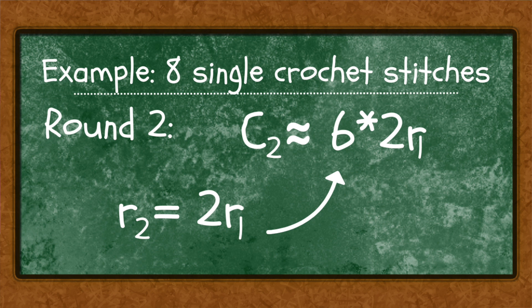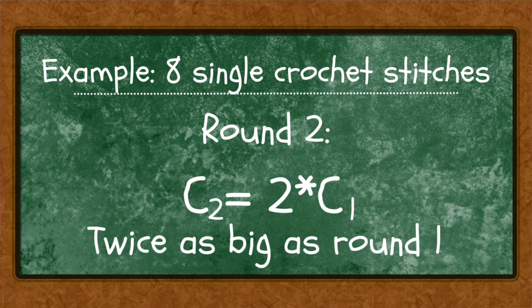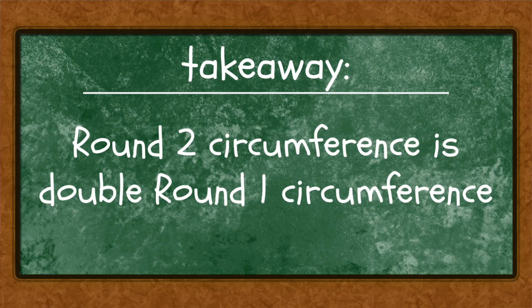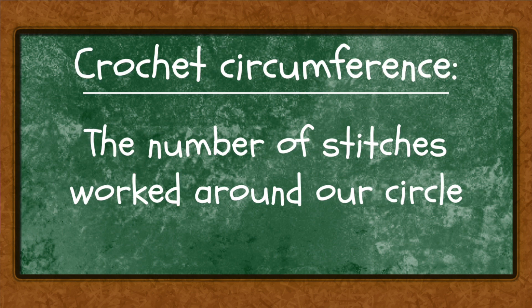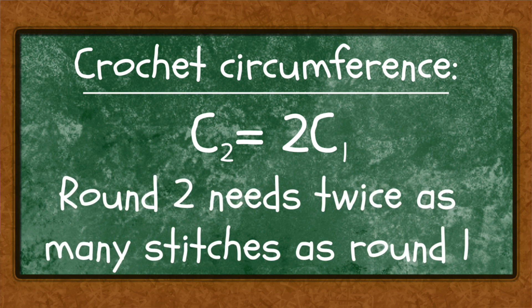Using the commutative property of multiplication we can rearrange to see that the circumference of round two equals two times the circumference of round one. The takeaway is that the circumference of round two is double the circumference of round one. In crochet terms, the circumference represents the number of stitches we work around — so if round two's circumference is twice round one's, the number of stitches in round two needs to be twice as many as in round one.